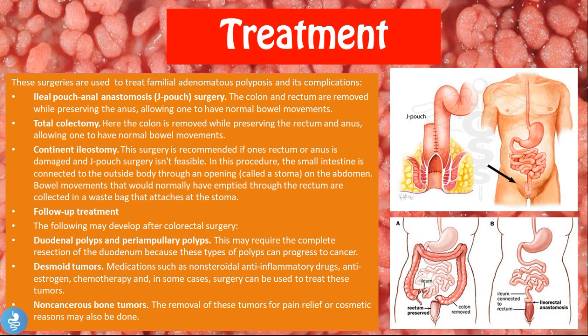Follow-up treatment after colorectal surgery may address duodenal and periampullary polyps, which may require complete resection of the duodenum as they can progress to cancer. Desmoid tumors are treated with NSAIDs, anti-estrogens, chemotherapy, or radiation. Non-cancerous bone tumors such as osteomas may also be removed for pain relief or cosmetic reasons.